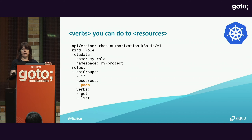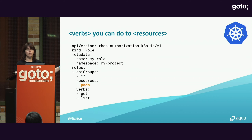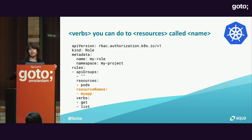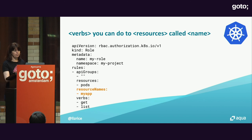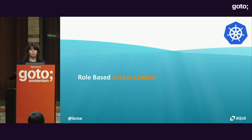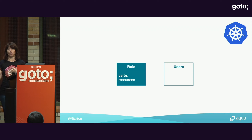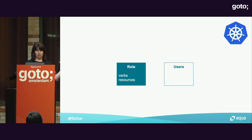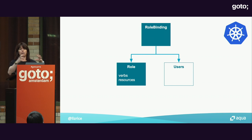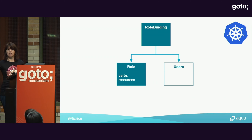Roles define which resources you can act on — it could be a group of resources like all pods, or a specific named resource like a pod called MyApp. Having defined those roles, we get to the access control part: the bit that says who can take these actions. If we have a user and a role, the thing that associates the two together is a role binding. The role binding says: this user can do the verbs on the resources as defined in this role.